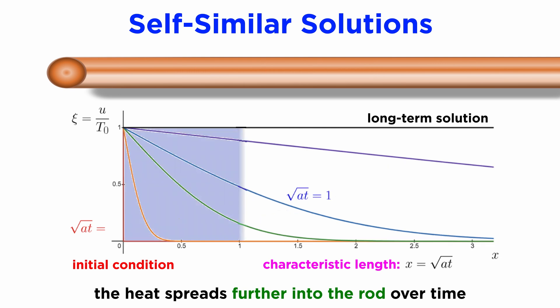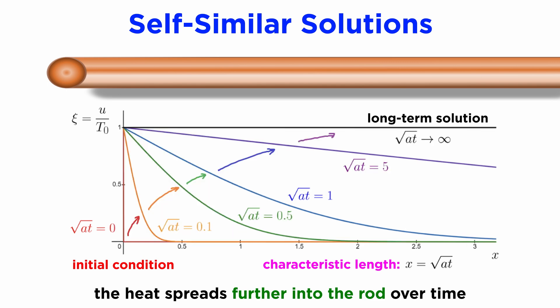For example, the blue curve with square root of at equals one has most of the high temperature region within the region x is less than one, and likewise for the other curves. So not only did using dimensional analysis allow us to more intuitively interpret the diffusion equation and its solutions, it also allowed us to quantify exactly how the effect of our initial conditions propagates in our solution over time, using the dimensionless number x over square root of at.